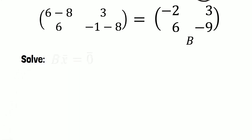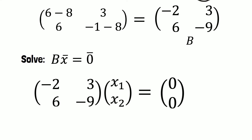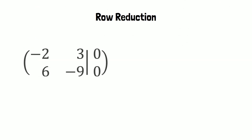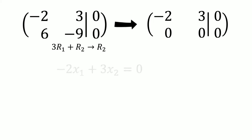Let's call this matrix B. We now have to solve B multiplied by the vector x equals the zero vector. So matrix B multiplied by the vector x consisting of x1 and x2 equals the zero vector. The next step is row reduction. You can see the entries of matrix B and the solutions of 0. When we multiply row 1 by 3 and add this to row 2, we find a new row 2 consisting of zeros only.